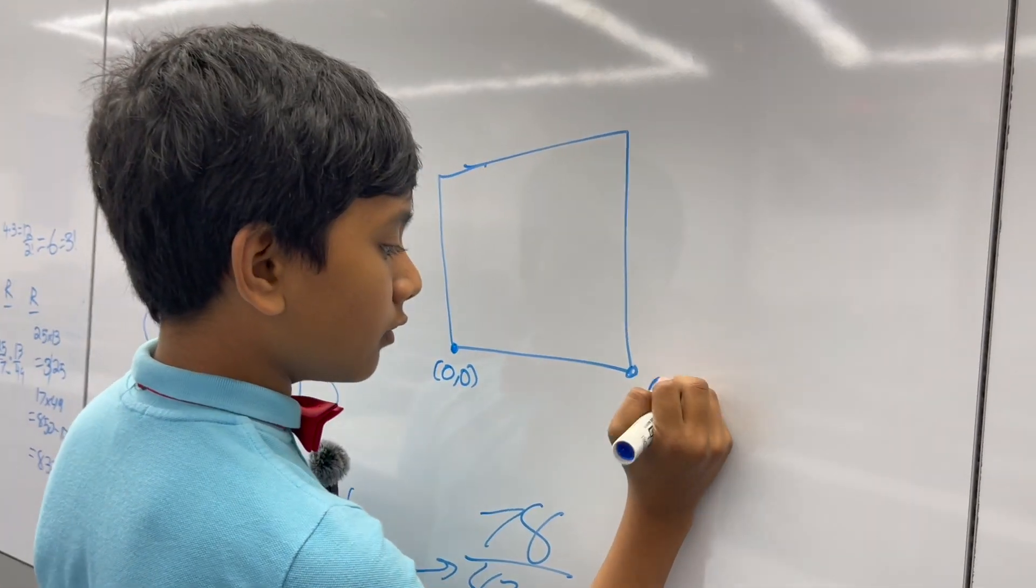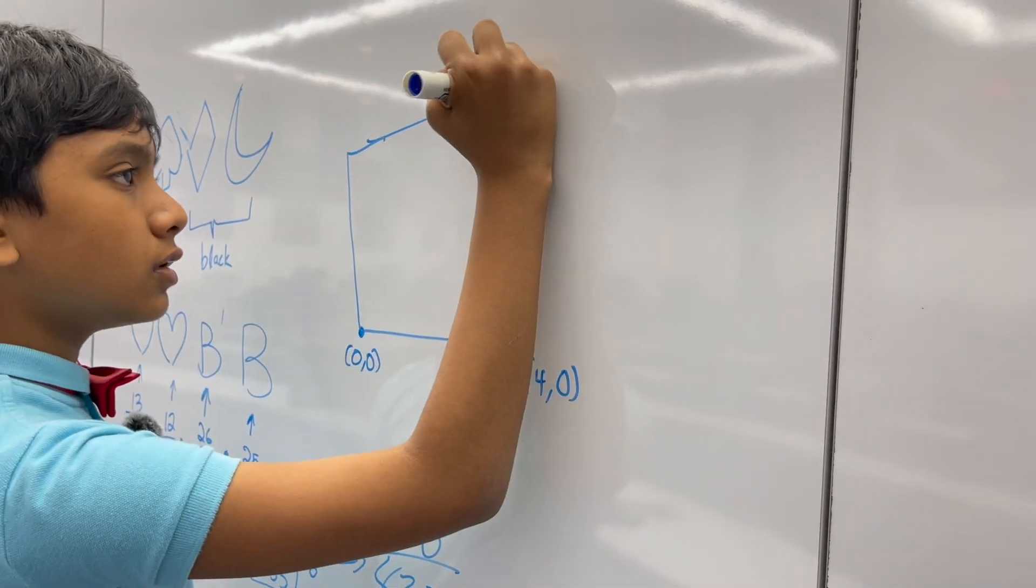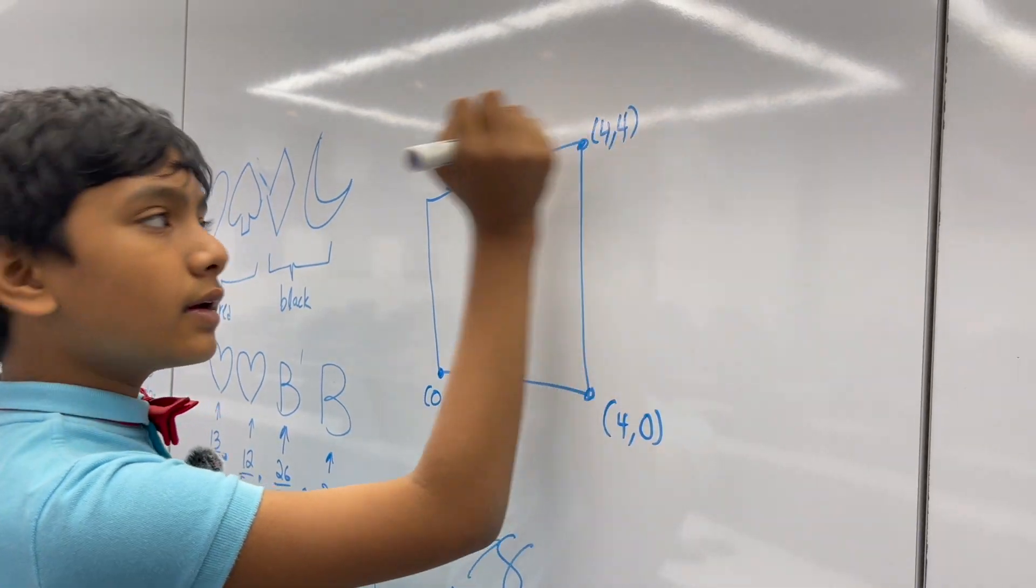Take a 4x4 square from the coordinate plane. 0, 0. A 4, 0. 4, 4. And 0, 4.